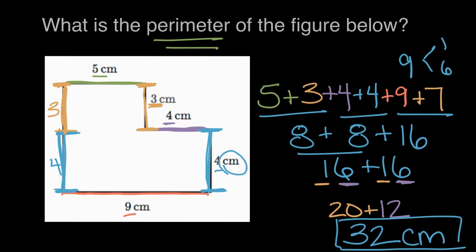The distance all the way around the outside of this figure, or the perimeter of the figure, is thirty-two centimeters.